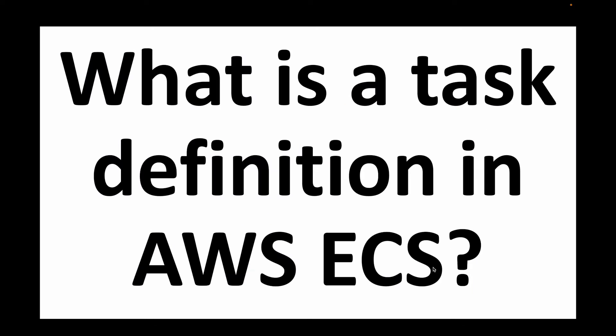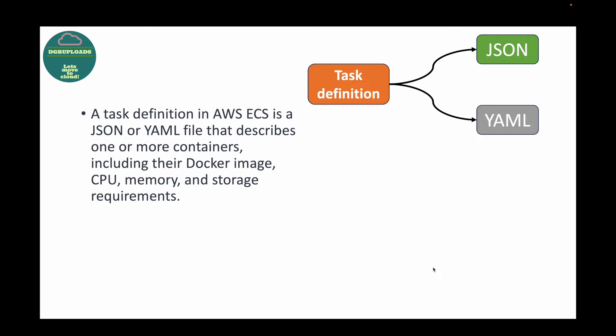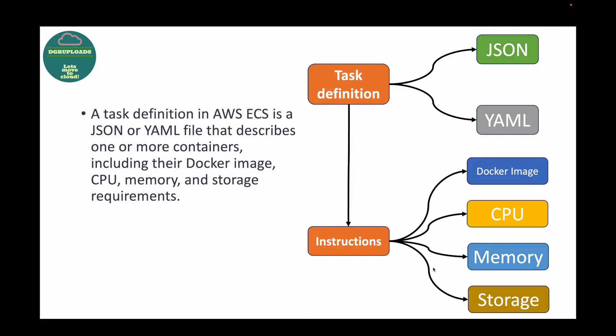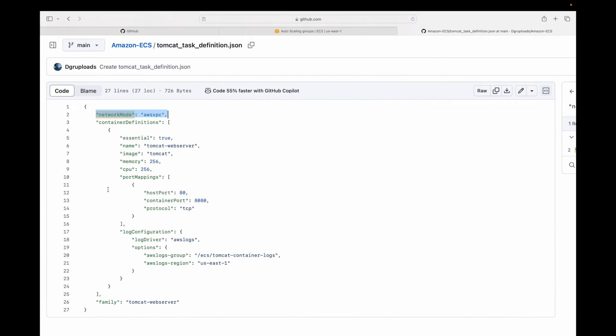The next question is: what is the task definition in AWS ECS? A task definition is basically what we use to give instructions to the ECS service. We write this task definition either in JSON or YAML format. These instructions tell ECS how many containers you want, which image to use, or on what port numbers to run. The task definition includes information like your Docker image, CPU, memory, and storage requirements. This is simply a blueprint for any task that you want to run within your service or as a standalone task.